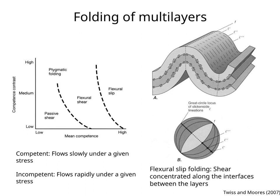Here, we need to look at two things, the mean competence and the competence contrast of the rock sequence. If the mean competence and competence contrast are low, passive shear folding will occur.